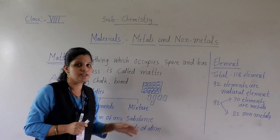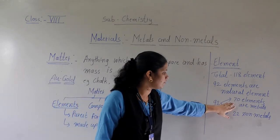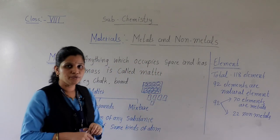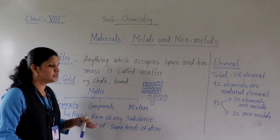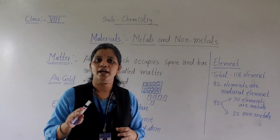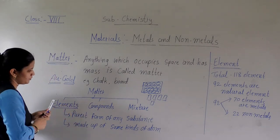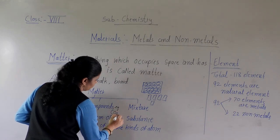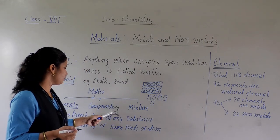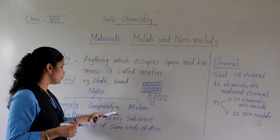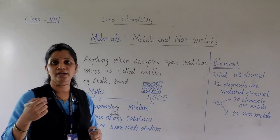So these are known as elements. Total 118 elements are present, out of which 92 are natural elements; in those 92, 70 are metals and 22 are non-metals. Now, compound means a combination of one or more than one element. For example, CO2 — carbon dioxide — has two elements: carbon and oxygen, so it is a compound. Another example is H2O, which is water, also a compound.